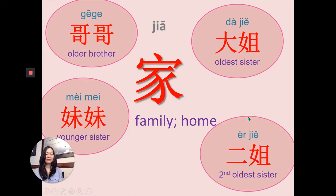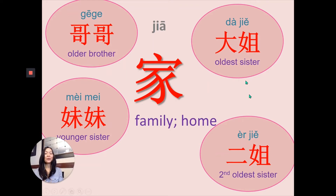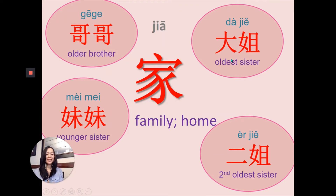二姐 — 二 means two, so 二姐 means second oldest sister. If you have many sisters in your family, the oldest one you will say 大姐, the second oldest one 二姐. Review: 哥哥, 妹妹, 大姐, 二姐.